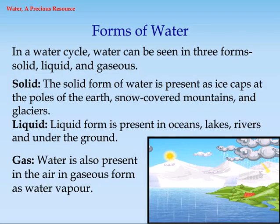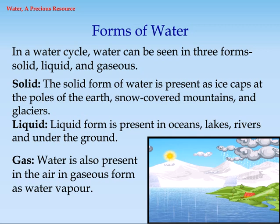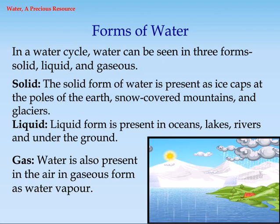Forms of water. In a water cycle, water can be seen in three forms: solid, liquid, and gaseous. The solid form of water is present as ice caps at the poles of the earth, snow-covered mountains, and glaciers.